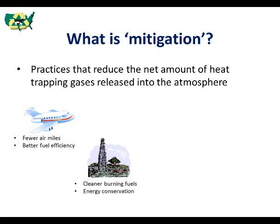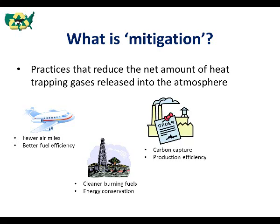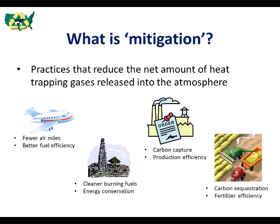In the energy sector, mitigation options might include cleaner burning fuels such as drilling for more natural gas compared to mining coal, as well as improving energy conservation throughout an electrical grid. Manufacturing facilities might look at carbon capture methods or improving production efficiency through automation and control technologies. And with agriculture we might consider soil carbon sequestration and improved fertilizer efficiency which improves crop production while reducing greenhouse gas emissions.